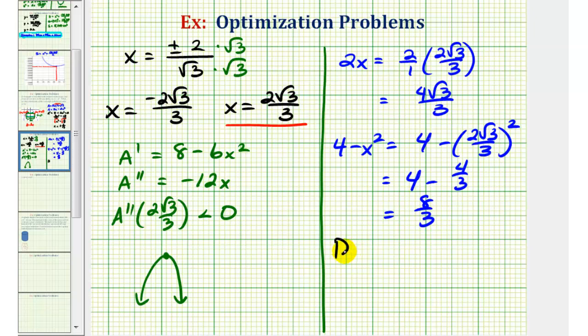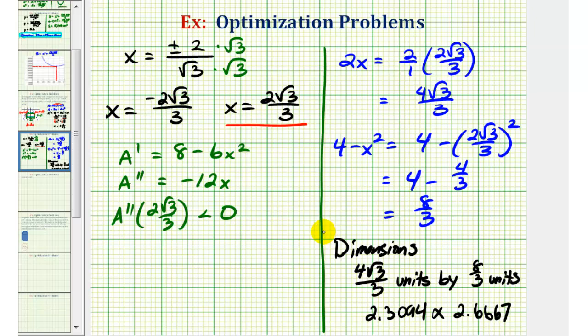So the dimensions of the rectangle with the maximum area would be 4 square root 3 divided by 3 units by 8 thirds units. Or for a decimal approximation, dimensions would be approximately 2.3094 by 2.6667. So this is what the question actually asks us to find.